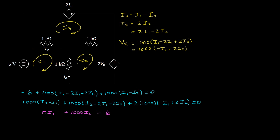For the second equation, grouping I1 terms: negative 1,000·I1 minus 2,000·I1 minus 2,000·I1 gives negative 5,000·I1. For I2 terms: 1,000·I2 plus 1,000·I2 plus 2,000·I2 plus another 4,000·I2 gives 8,000·I2. There are no constant terms, so this equals zero.